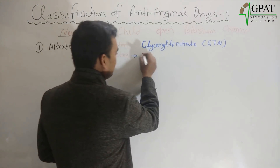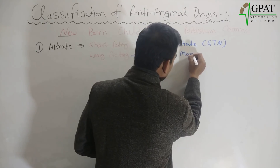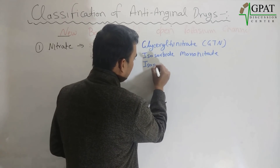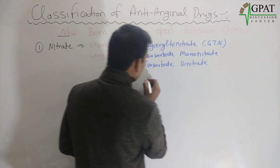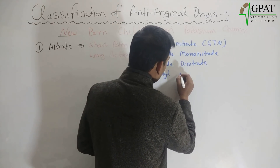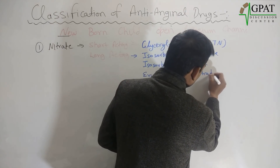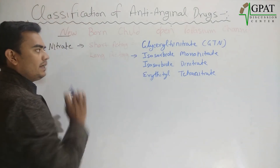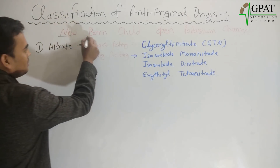The long-acting nitrate drugs are isosorbide mononitrate, isosorbide dinitrate, erythritol tetranitrate, and pentaerythritol tetranitrate. These are the two major classes — short-acting and long-acting — of the nitrates. Your next class, from the 'B' in born, is beta blocker.